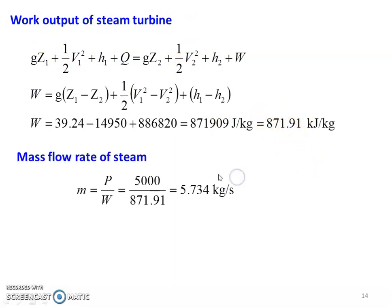Mass flow rate of the steam: M equals power divided by work done. Power is 5 megawatt equals 5000 kilojoules per second. So M equals 5000 divided by 871.91, equal to 5.734 kilograms per second. That is the amount of steam flowing through the turbine.